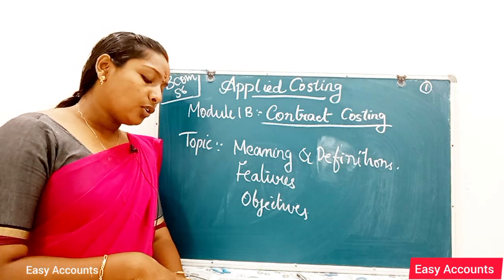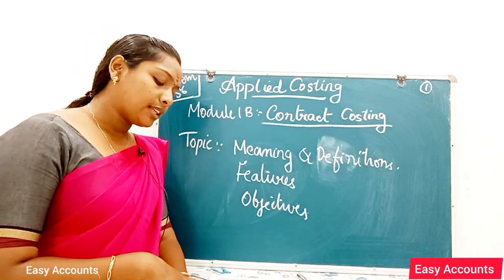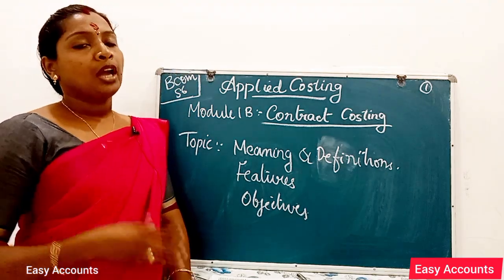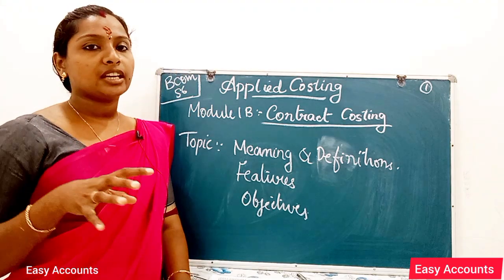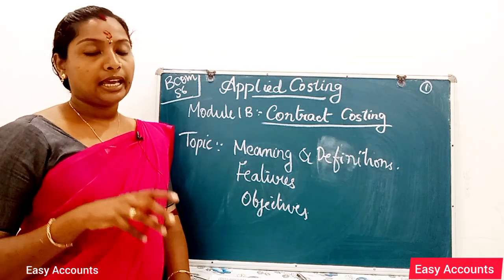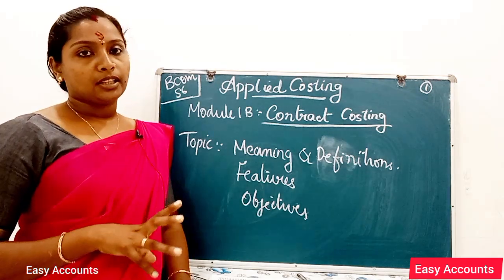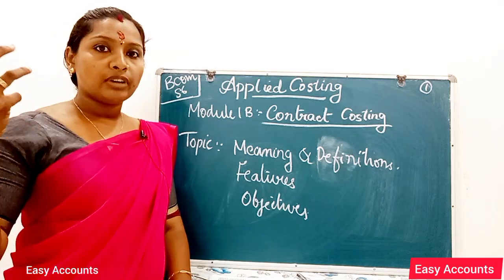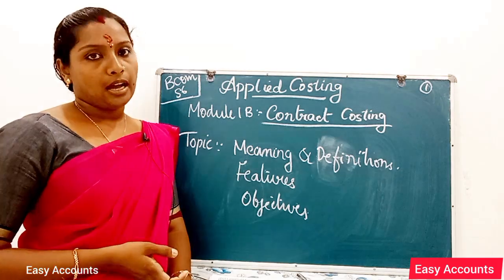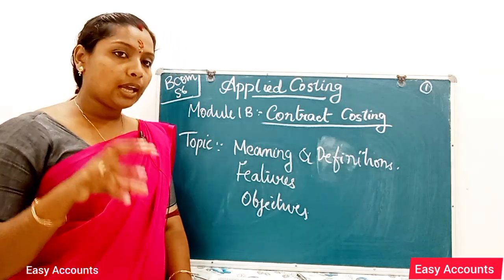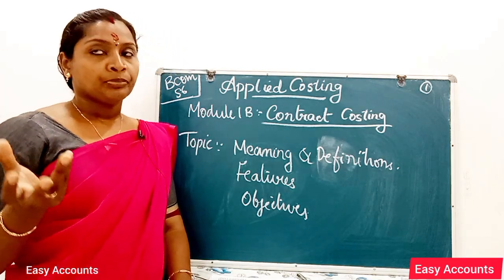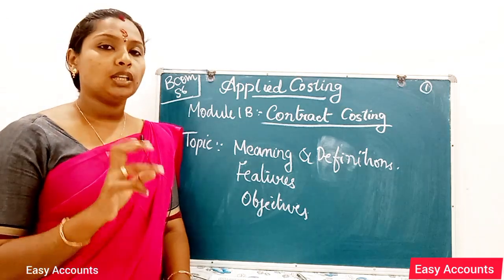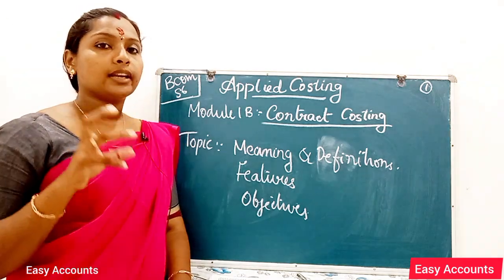Regarding location of work: work on a contract is usually executed at the site of the contract. It is usually far away from the main office of the contractor, unlike a factory where work is located within the factory premises.